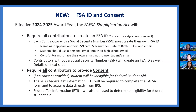Another new change: the FSA ID and consent. It is required for all contributors to create an FSA ID — it will be their electronic signature and consent. Each contributor with a social security number must create their own FSA ID and use their name as it appears on their social security card, social security number, date of birth, and email. Students should use a personal email, not their high school one, because once they graduate the school email will be discontinued. Contributors must have their own email and not use the student's email. Contributors without a social security number will also be able to create an FSA ID. If no consent is provided, students will be ineligible for federal student aid.